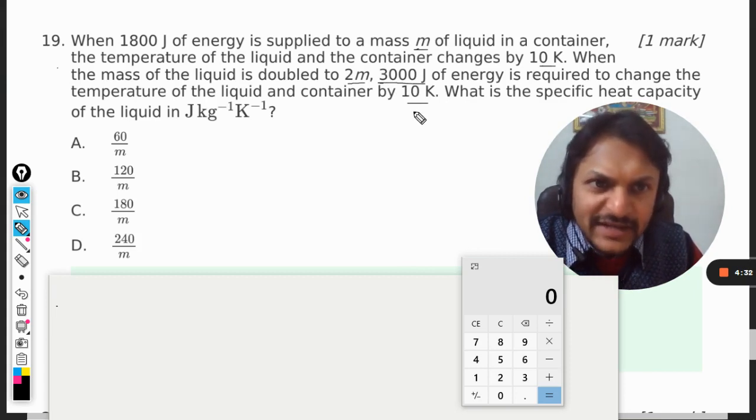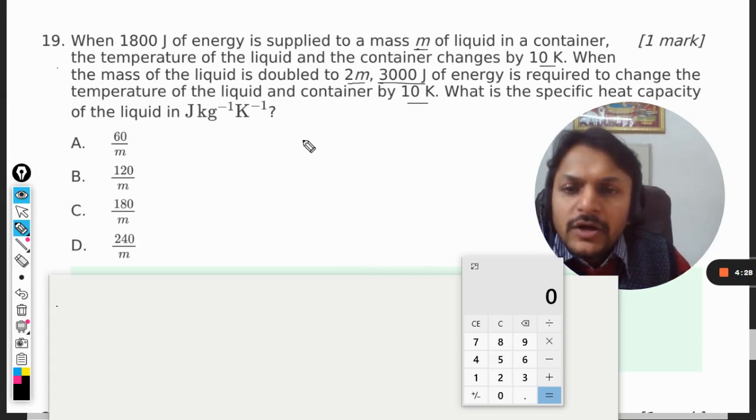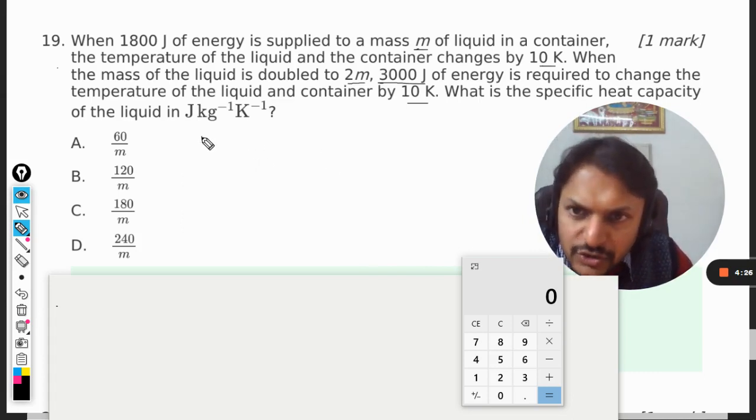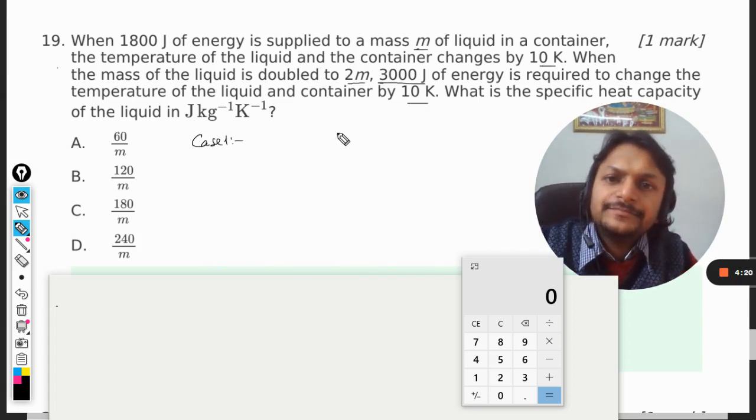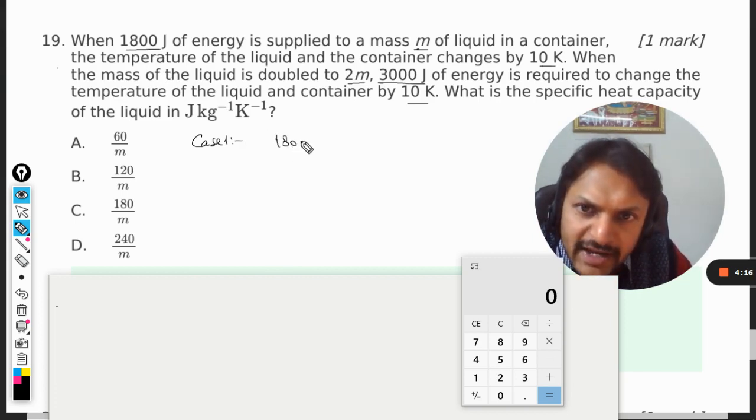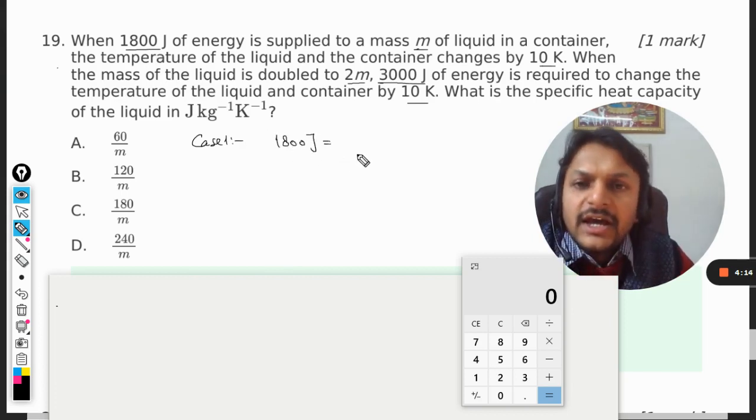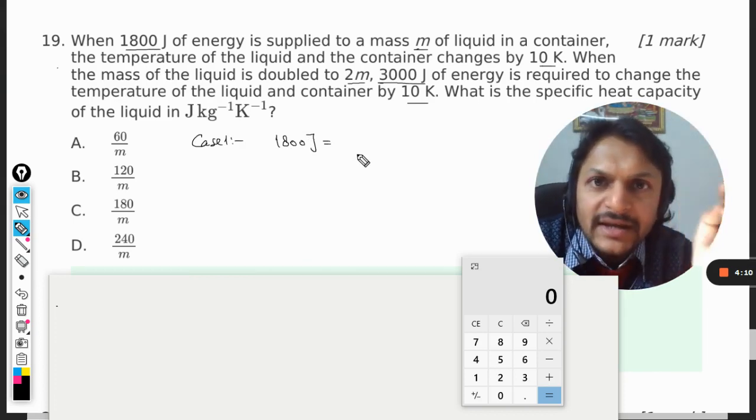That is 10 K. What is the specific heat capacity of the liquid? We have to now create the equations here. Let us say we are considering case number one. Q is the heat given, and what is the heat given? 1800 joules. So 1800 joule energy is utilized by two substances—one is liquid, another is the container.